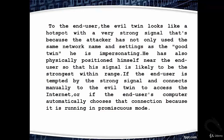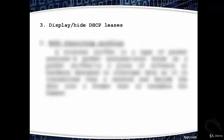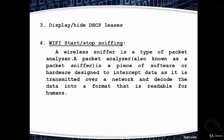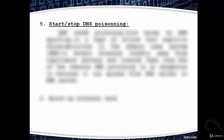If the end user connects manually to the evil twin, or if their computer automatically chooses it because it is running in promiscuous mode, the attacker intercepts the traffic. Third: display or hide DHCP leases. Fourth: Wi-Fi start or stop sniffing. A wireless sniffer is a type of packet analyzer — software or hardware designed to intercept and decode data transmitted over a network into a human-readable format.